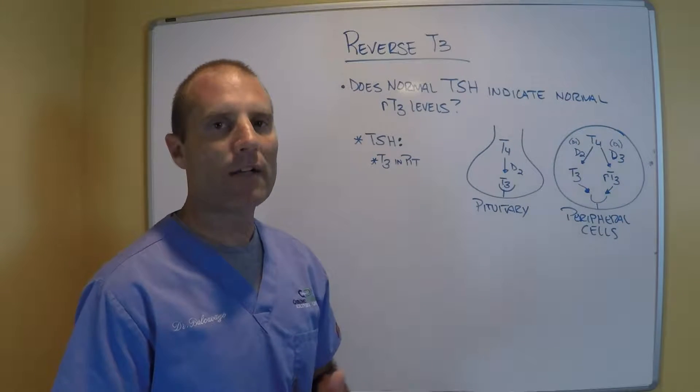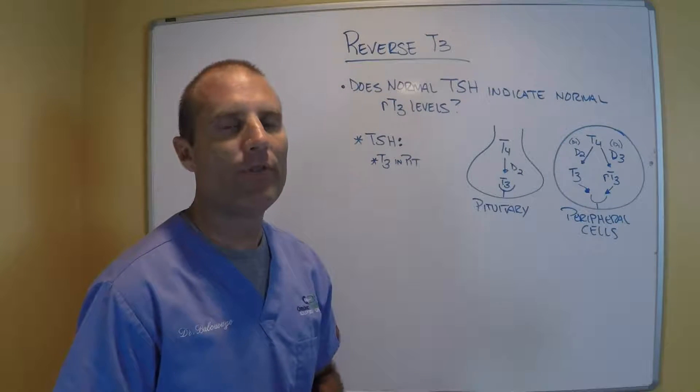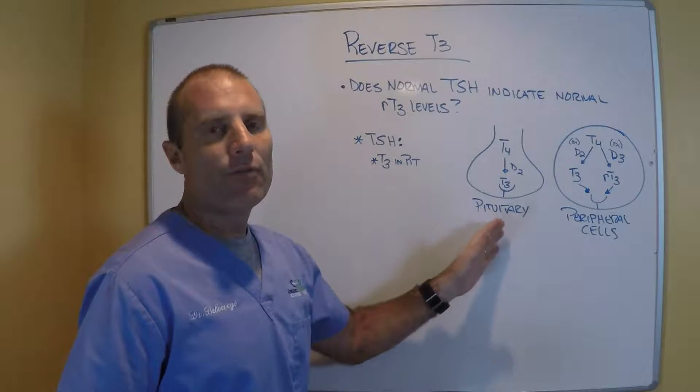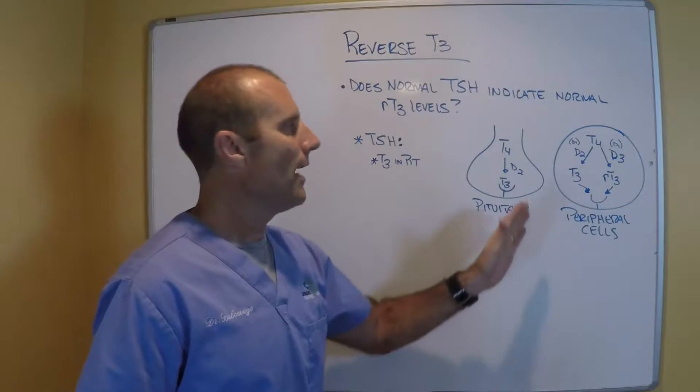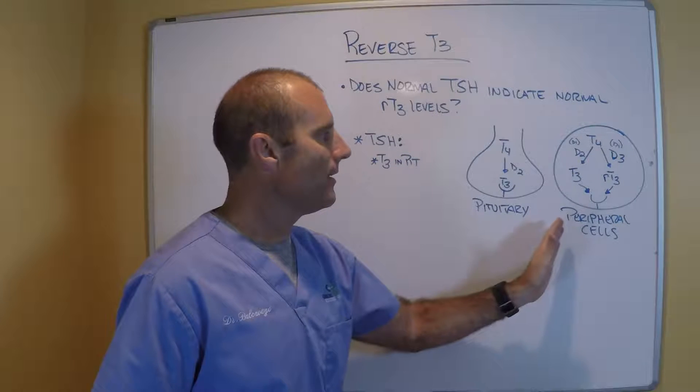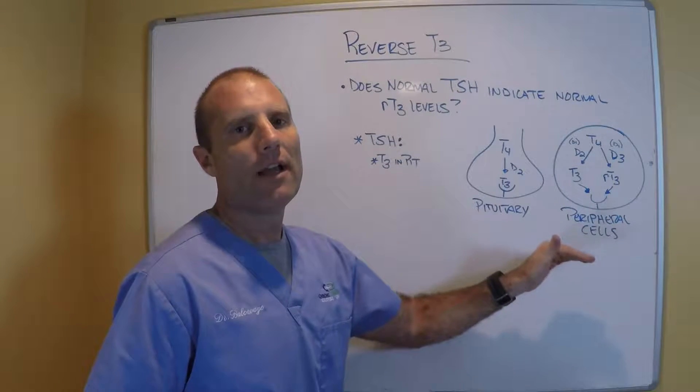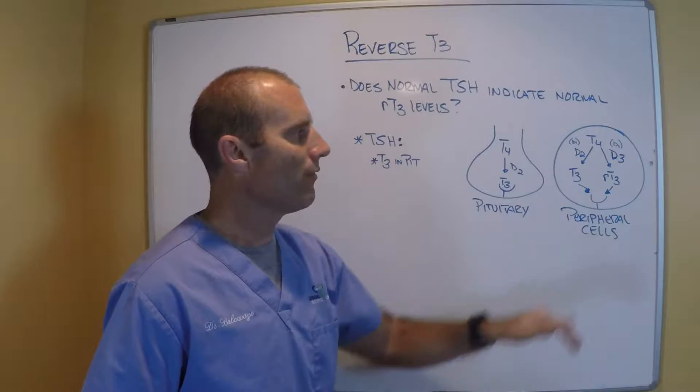But as I've talked about on a number of videos, TSH only represents the T3 at the pituitary gland. We now know via research that TSH does not represent the T3 level and the T3 saturation at the peripheral cells.